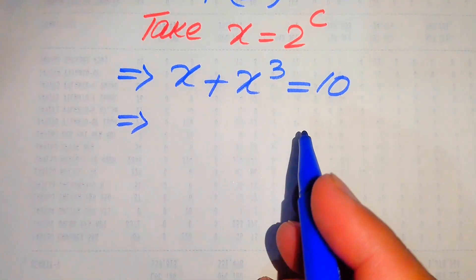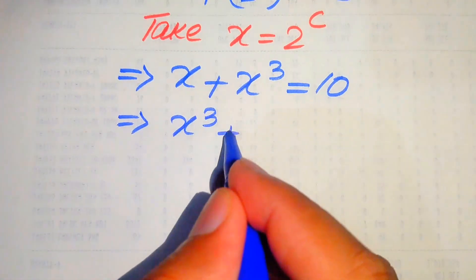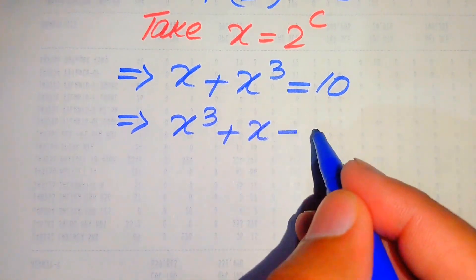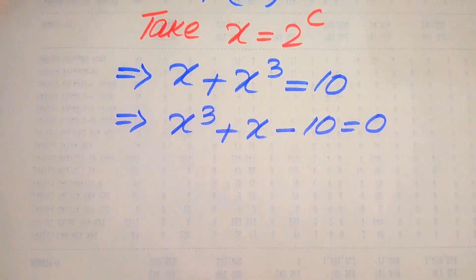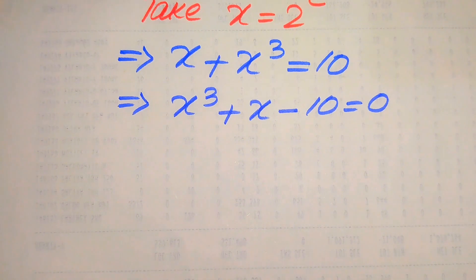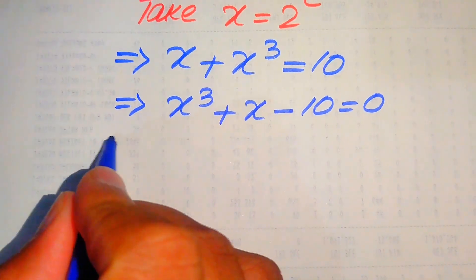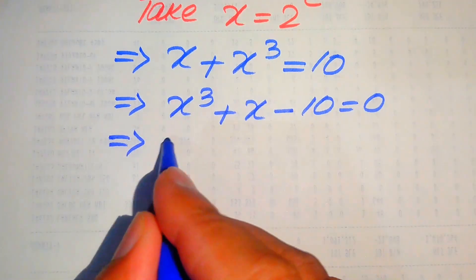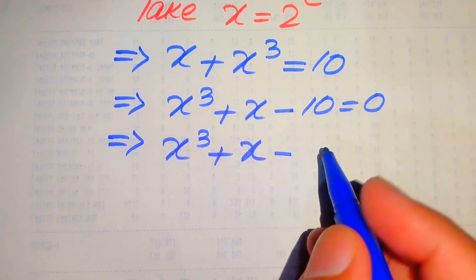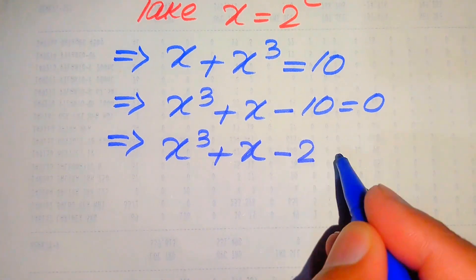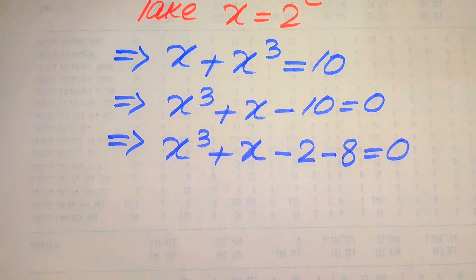Now we rearrange the terms and move 10 to the left-hand side, giving us x cubed plus x minus 10 equals 0. To solve further, we break the term minus 10 and write it as minus 2 and minus 8, so the equation becomes x cubed plus x minus 2 minus 8 equals 0.